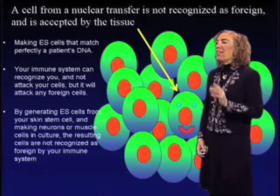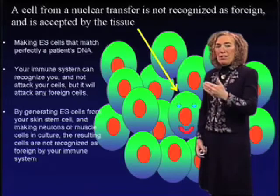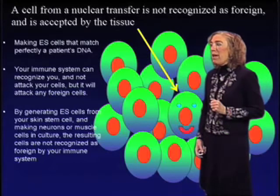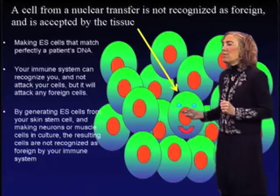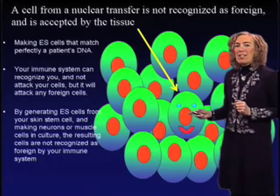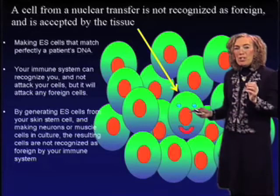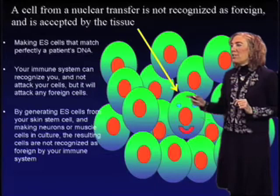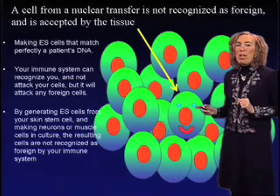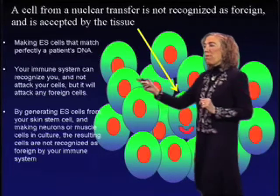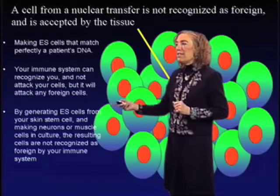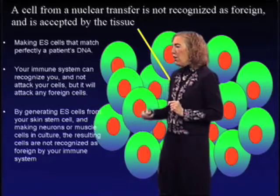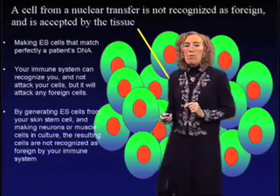The benefit now is that we have embryonic stem cells that perfectly match the patient's DNA. If we generate pancreatic islet cells from those perfectly genetically matched embryonic stem cells, the patient's immune system is going to recognize those cells. Even though they came from a hybrid, the genetic content was in fact the patient's genetic content. This cell is basically not going to be rejected. By generating embryonic stem cells from a skin stem cell and making neurons or muscle cells in culture, the resulting cells are not recognized as foreign by the immune system.